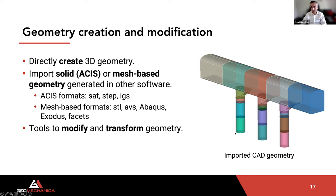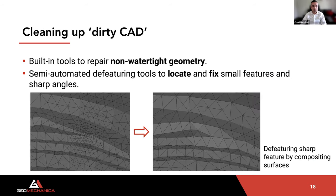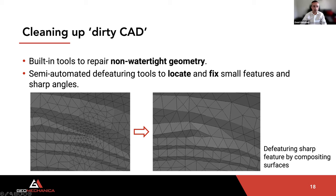You can also clean up dirty CAD because CAD drawings are not usually exact. There are built-in tools to repair non-watertight geometry and semi-automated de-featuring tools to locate and fix small features and sharp angles. For example, a CAD import of an open-pit slope with small features can have those sharp features removed by compositing or combining surfaces, resulting in a clean geometry.